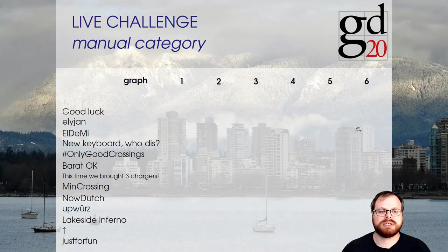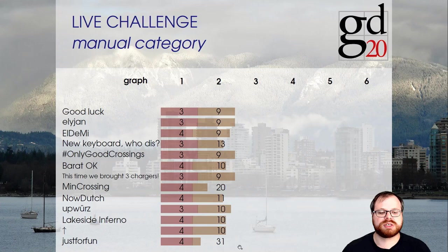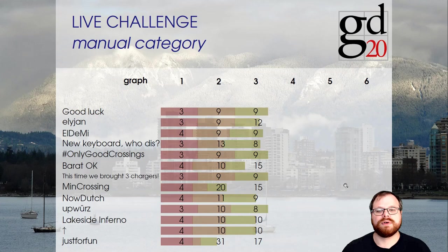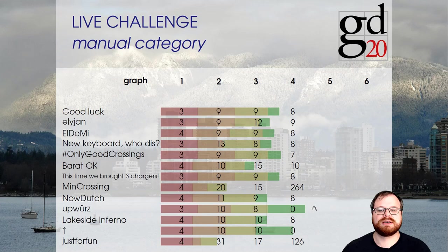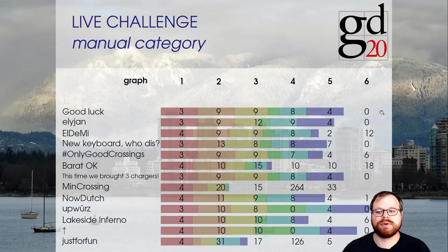In the manual category with 13 teams and 6 graphs: for graph 1, many teams found the best solution with 3 crossings and all others had 4. For graph 2, the best was 9 and the worst was 31, but most found 9 or 10. For graph 3, the best was 8 crossings. In graph 4, we saw big differences — two teams found 0 crossings while all others had at least 7, and one team even had 264. In graph 5, the best had 2 crossings and most found 4. Graph 6 was planar and many teams found a planar solution.